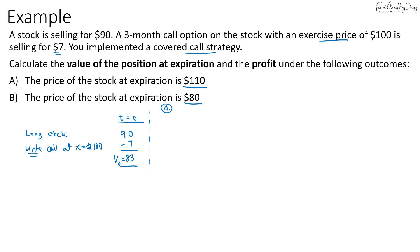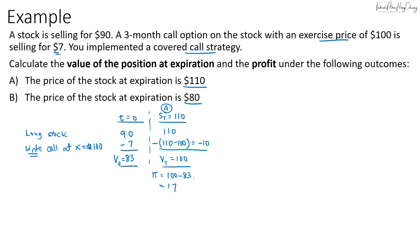Fast forward three months later: if the spot price is $110, the stock value will be $110. Since $110 is higher than the exercise price of $100, the call option can be exercised. The payoff is $110 minus $100, but since we wrote the call, it's a liability — we pay $10 to the party we sold it to. The total value of the covered call is $110 minus $10, which is $100, giving a profit of $100 minus $83, equal to $17.